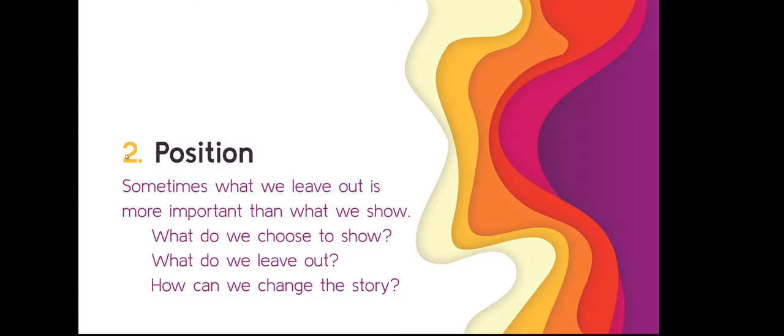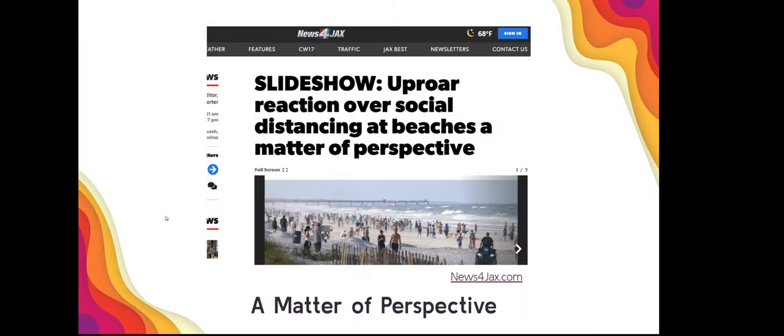The other thing that you can shift is position, and what position I'm talking about is your position or the camera's position of where it is and what it's focusing on. So sometimes what we leave out is more important than what we choose to show. You can get closer to something to change the meaning, you can get further away, you can move your position from the left to the right or in front to behind. So what are you going to choose to show and leave out, and what details can you emphasize in different ways?